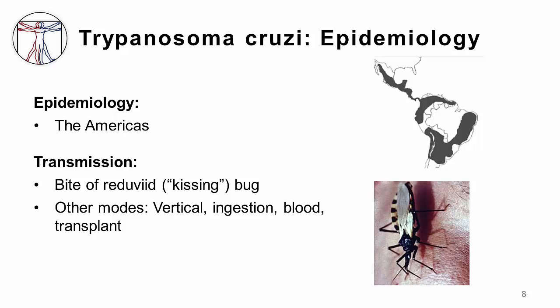You get infected with T. cruzi after a bite from an infected reduvid or kissing bug. This bug lives in the walls of rural huts and feeds at night. This bug likes to bite at the mouth or the eyes, hence the name kissing bug. There are other modes of transmission, including vertical transmission, ingestion of the parasite, blood transfusions, and organ transplantation.